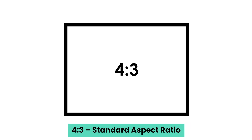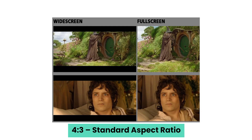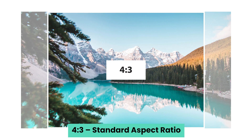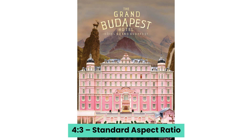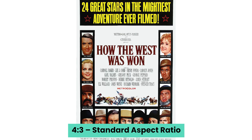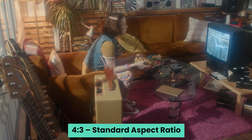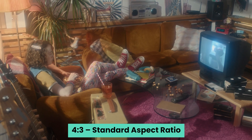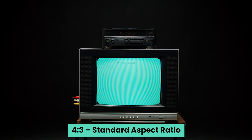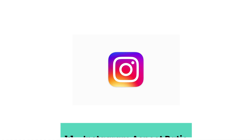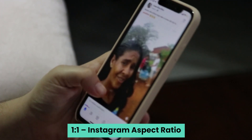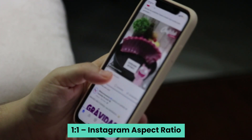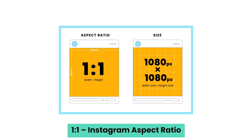4:3 — Standard aspect ratio. The 4:3 aspect ratio served the film and TV industry for several decades, and it is still being utilized by admirers. If you have seen movies like A Ghost Story (2017), The Grand Budapest Hotel (2014), or How the West Was Won (1962), then you know what a 4:3 aspect ratio is. While filmmakers have largely stopped filming on 4:3, it seems to be returning to the industry. 1:1 — Instagram aspect ratio. 1:1, or the square aspect ratio, is commonly found on Instagram. It means that all videos captured using this aspect ratio have the same width and height.